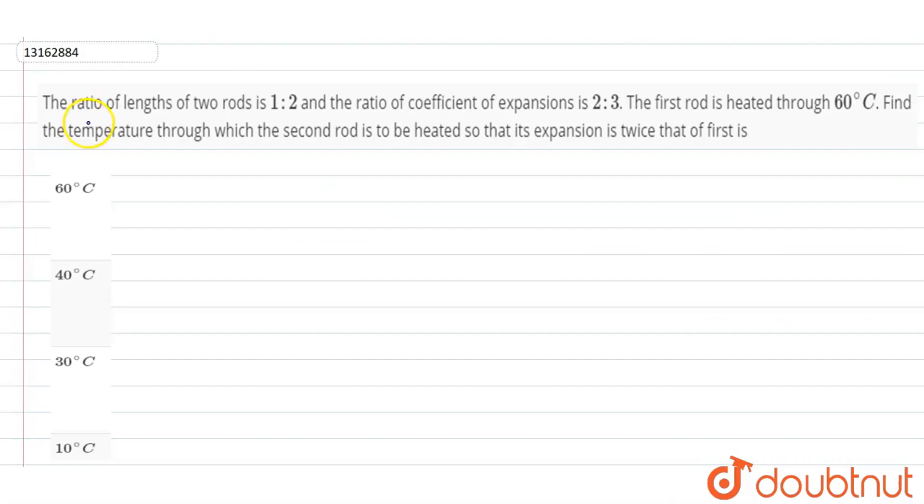So the question is that the ratio of length of two rods is 1 is to 2. So we can write that L1 by L2 is equal to 1 by 2, where L1 is one rod and L2 is the length of the second rod. The ratio of coefficient of expansion is 2 is to 3, so we can write that alpha 1 by alpha 2 is equal to 2 by 3.